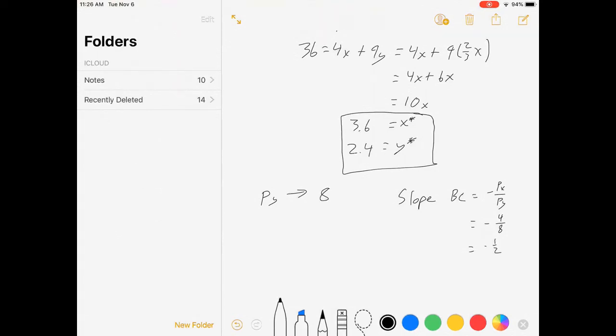My preferences didn't change. My utility function didn't change. So my MRS didn't change. The MRS is still, slope of the indifference curve is the negative of the MRS. It's still minus 2 thirds, 2 thirds y over x. So I'm just going to do the same steps again, reflecting the new slope of the budget constraint. Minus 2 over 3 y over x is equal to minus 1 half.